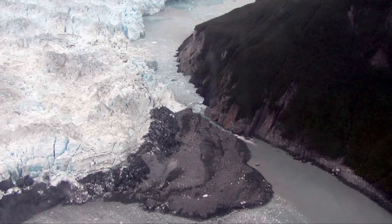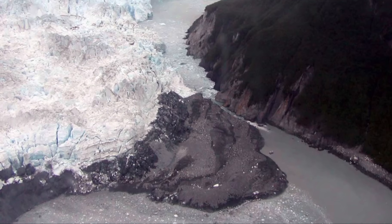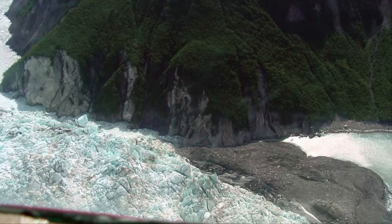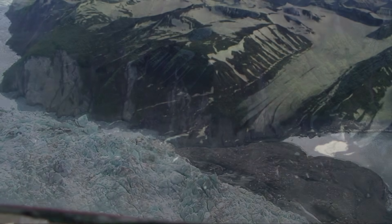Here's a terminal moraine in reality. This area right here is the till — the unsorted, unlayered sediment that was pushed out in front of the glacier. We can see another terminal moraine right here.